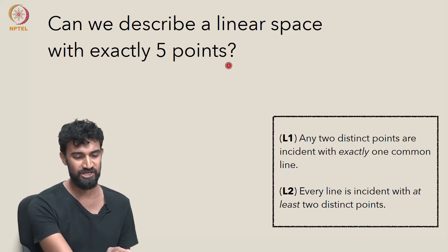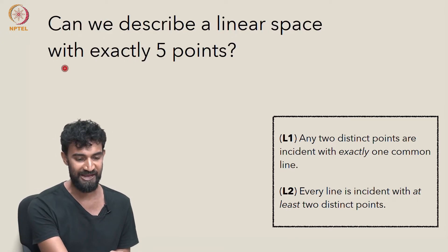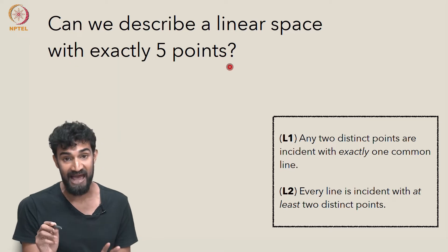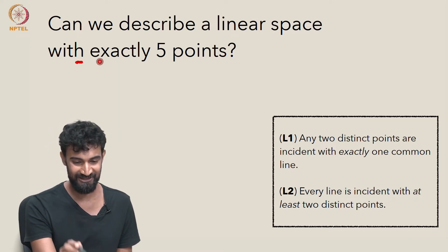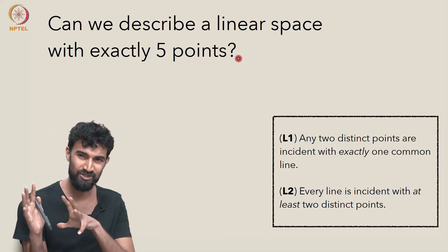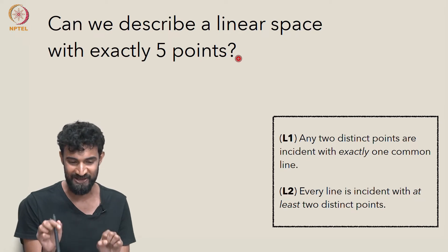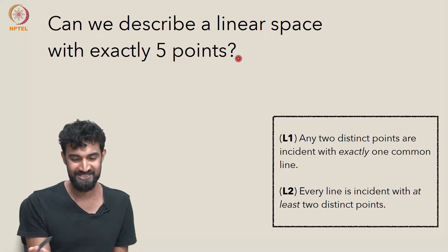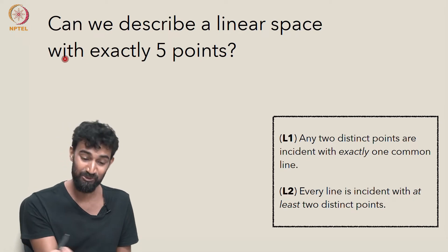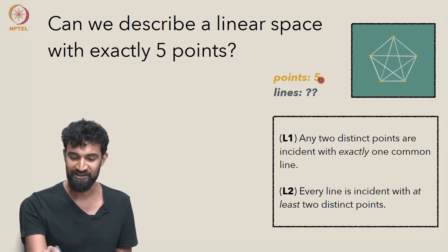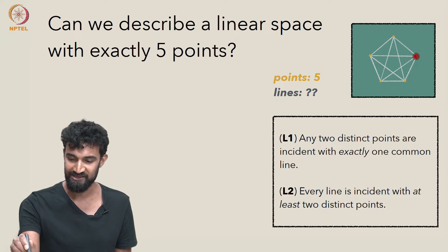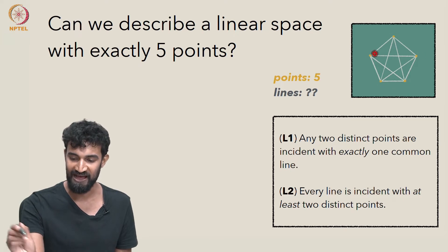A question is: can we describe a linear space with exactly five points? Let's forget infinitely large spaces and try to make a really small space satisfying these axioms. Here's an example of a linear space with five points: one, two, three, four, five.